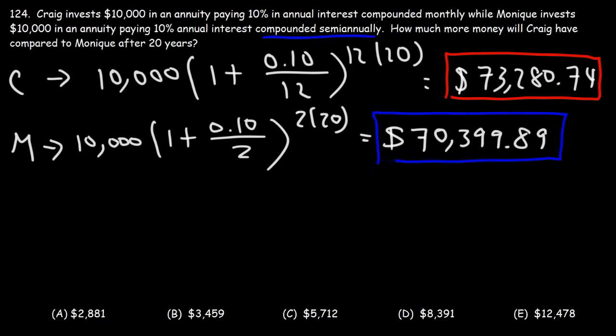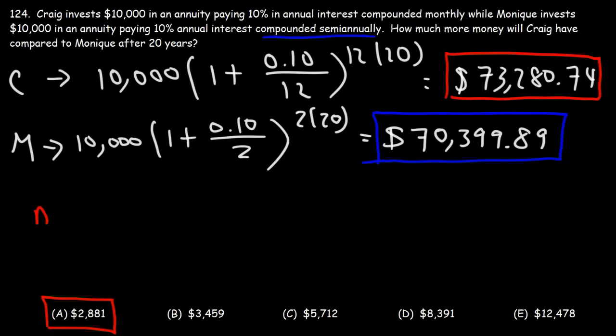Now let's subtract these two numbers to get our answer. The difference is approximately $2,881. As you can see, if an account is compounded monthly compared to semi-annually, you're going to earn more. As N increases, the account value will increase as well, so it's better to have your account compounded monthly than semi-annually. But the difference, even over 20 years, is not that great.